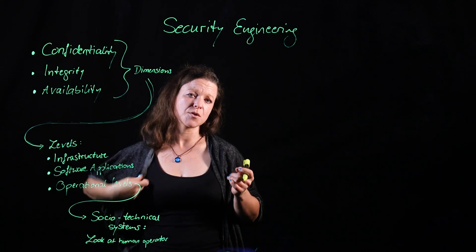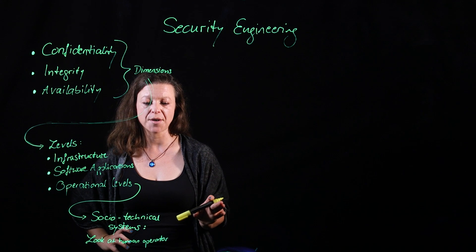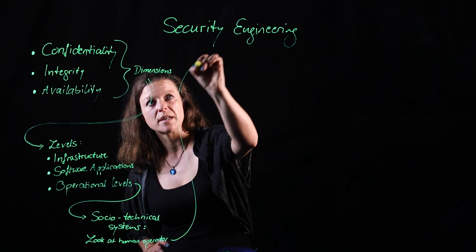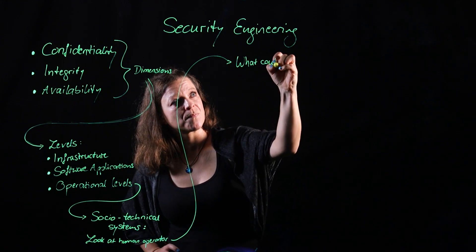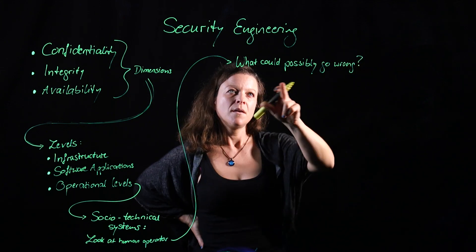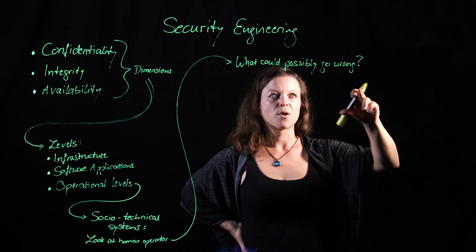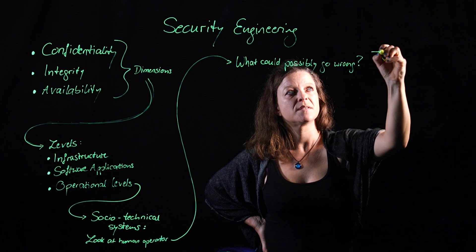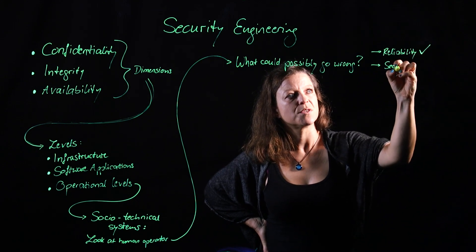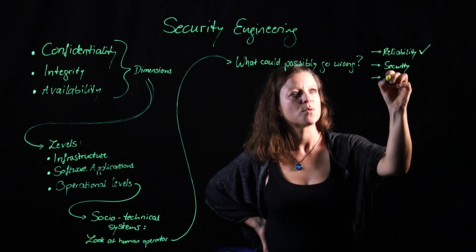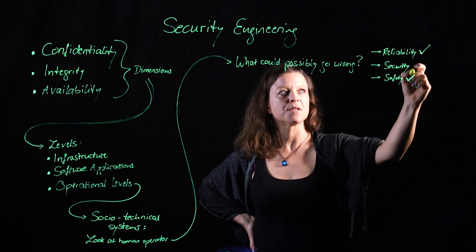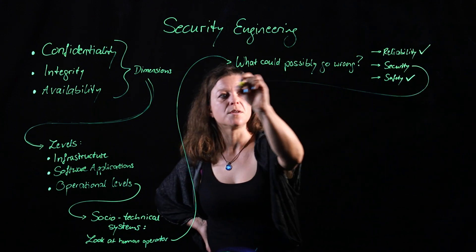When you are a software engineer, a requirements engineer, or a system architect — anywhere in that chain — and you want to think of all the things that could possibly go wrong, that leads us to a superset of everything that could go wrong, which includes all the reliability use cases. So let's say reliability has already been taken care of. Then for security — and also for safety, which is covered in another chapter — today we'll look at security. And for security, what we can use are misuse cases.